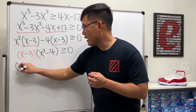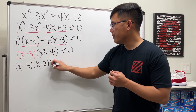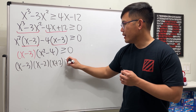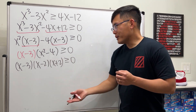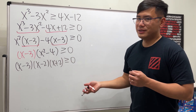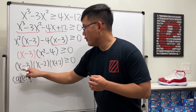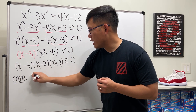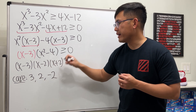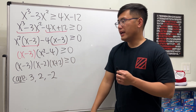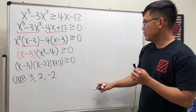We can factor further: (x² minus 4) is a difference of squares, giving us (x minus 3)(x minus 2)(x plus 2) ≥ 0. The critical values we care about are: three from (x minus 3), two from (x minus 2), and negative two from (x plus 2). Now let's do the number line test.